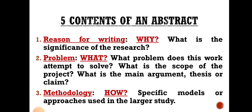Now we come to the contents of an abstract. When asked what are the five contents of an abstract, the first is the reason for writing — it defines the 'why' of the research: what is the significance of the research, why you are doing this research, what is the purpose behind it. This can also be termed the introduction, and it is discussed at the very beginning of the abstract.